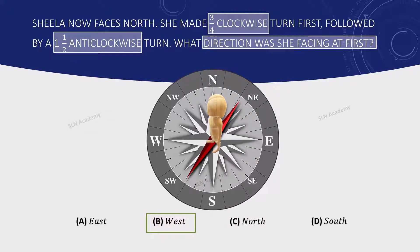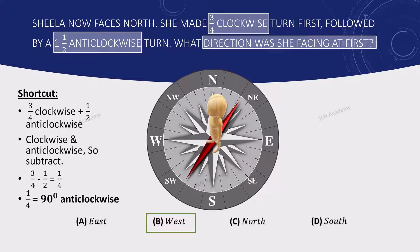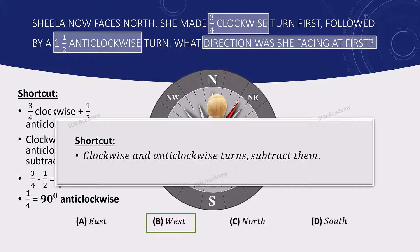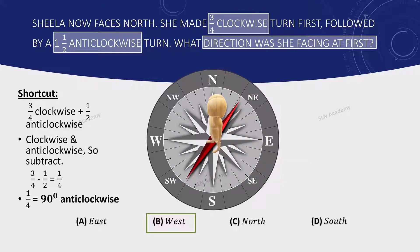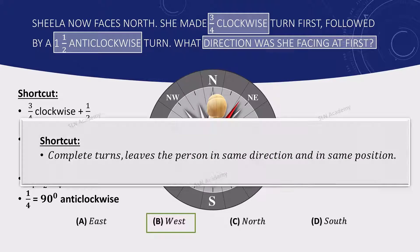Tips for Question 7: When a person makes both clockwise and anticlockwise turns, subtract them. Additionally, complete turns leave the person in the same direction and position, so you can simply ignore complete turns when finding the final or initial direction.